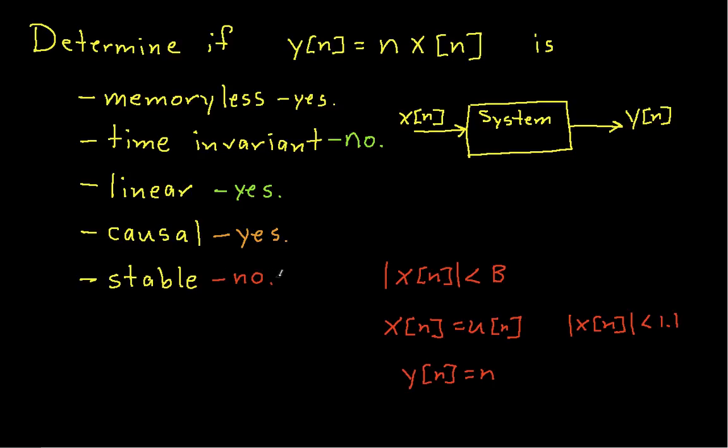So there you have it. We've determined that this system is memoryless, is not time invariant, is linear, is causal, but is not stable. Hopefully this has made good sense and you found it useful. Thanks for watching.